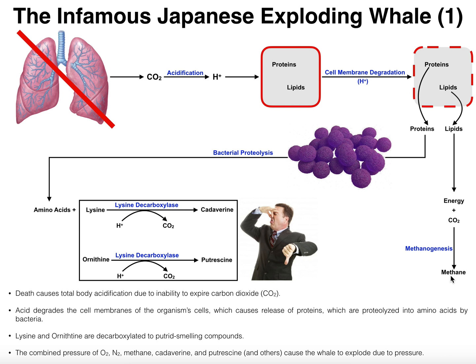The main thing really going on here is a lot of gas buildup. In particular, methane is going to be in the gas phase and it's going to increase the pressure inside the organism. There are also other gases such as oxygen and nitrogen, but in particular methane is really what's going to cause the pressure inside this decaying organism to build up and up and up.